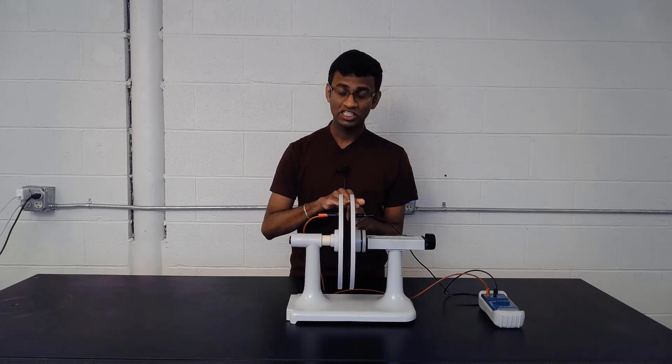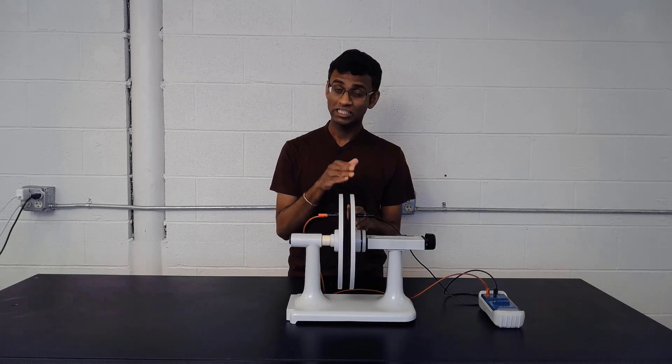If I define the meaning of capacitance, capacitance is how much charge on one plate in coulombs when there is a unit potential gradient in between the two plates. If I say that in an equation, capacitance equals charge on a parallel plate divided by the potential difference between two plates.